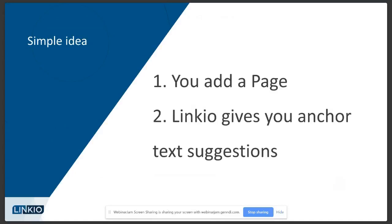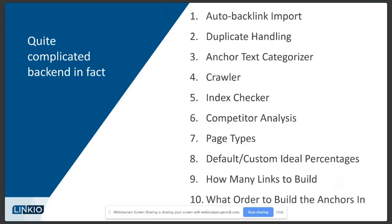Linkio started as a pretty simple idea: you have a page, you're building links to that page, and as you build links you need to use certain anchor text, and Linkio would give you those anchor text suggestions. But as we started building the tool we realized we needed to automatically give you the data — figuring out links coming from the same domain, categorizing anchor text algorithmically so you don't do it manually, and using a crawler to periodically check and validate links.